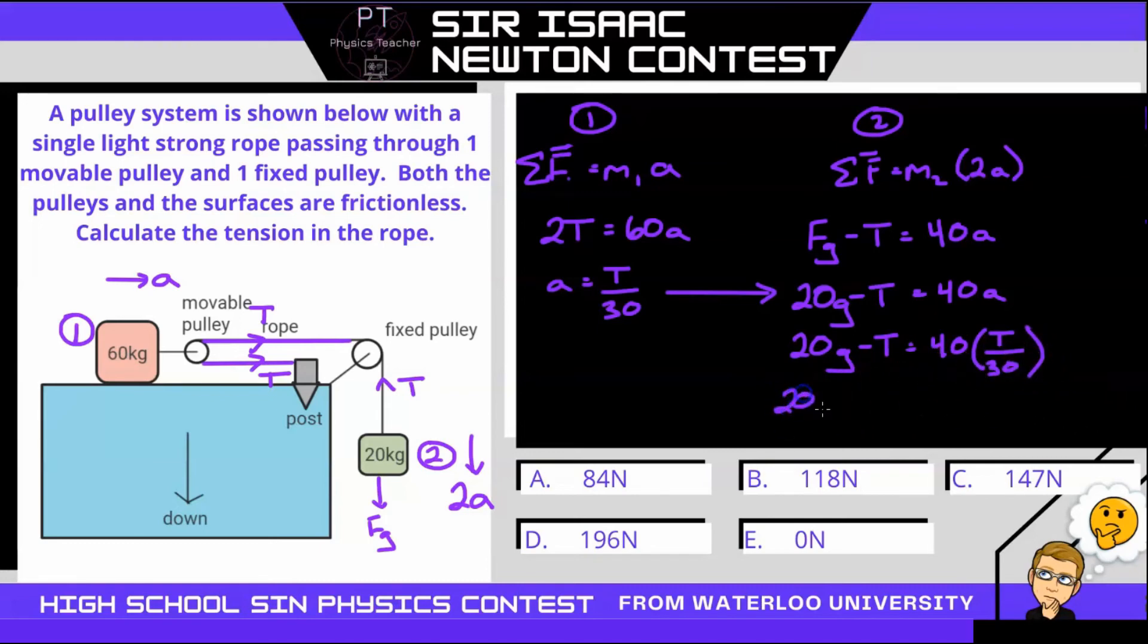So we have 20G. We'll move this tension to the other side. So that equals 40 over 30 is just 4 over 3T, plus T, which is equal to 7 over 3T.